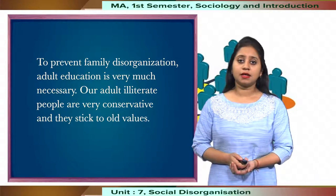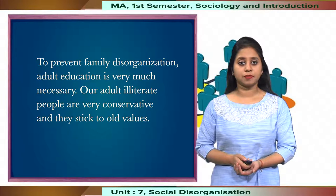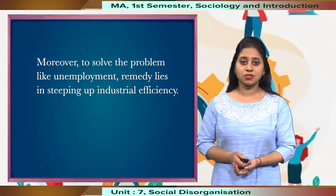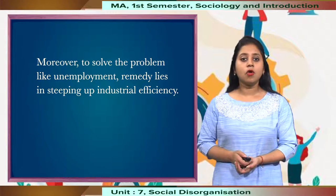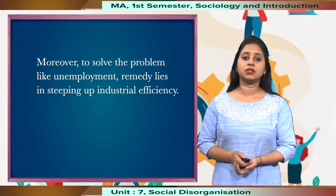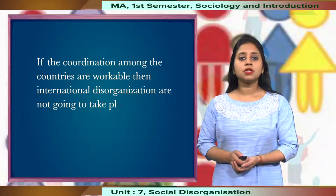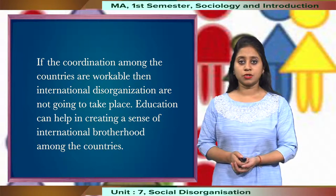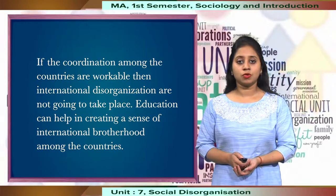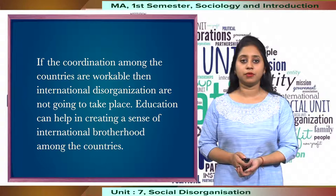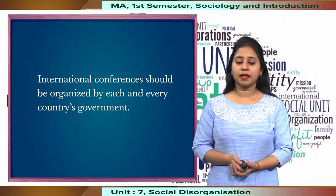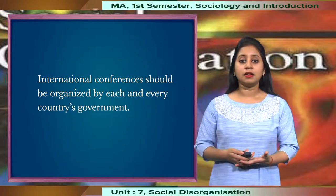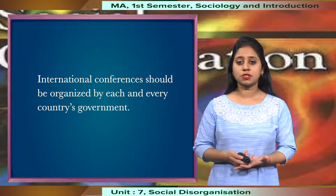To prevent family disorganisation, adult education is also very important. To solve problems like unemployment, the remedy lies in stepping up industrial efficiency, and a country should reconstruct and overhaul the educational system according to the changing environment. If coordination among countries is workable, then international disorganisation is also not going to take place. Education can help strengthen the sense of international brotherhood, and international conferences should be organised to enable individuals to understand current problems and solve them through discussions and deliberations.